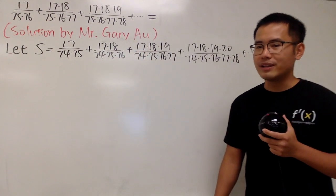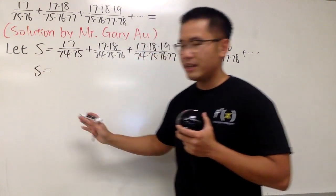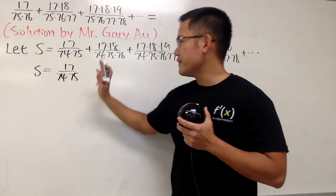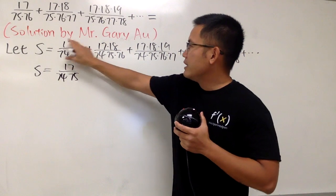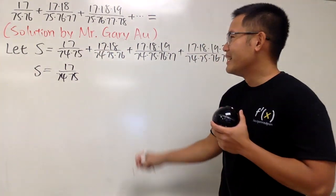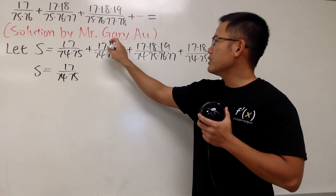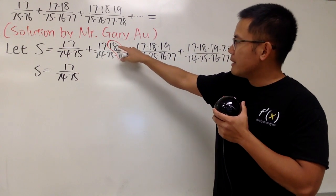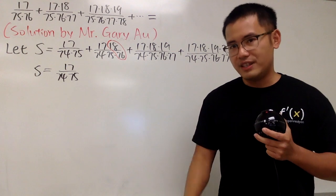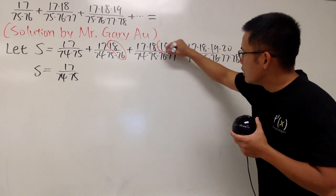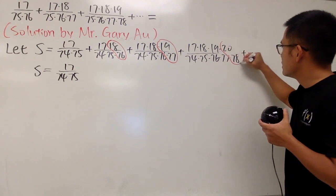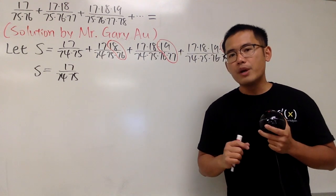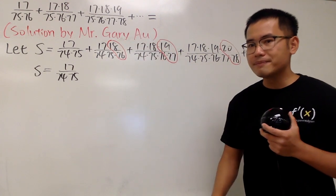And we will start like this and we will continue with the same pattern, meaning that the next one will be 17 times 18 over 74 times 75 times 76, and we just continue with the same fashion. Very good. Now, this is how we are going to continue. We leave S as how it is, and we also don't want to mess around with the first term, 17 over 74 times 75.